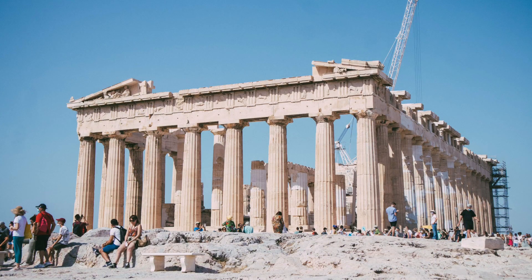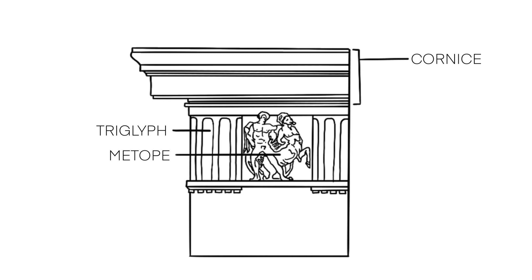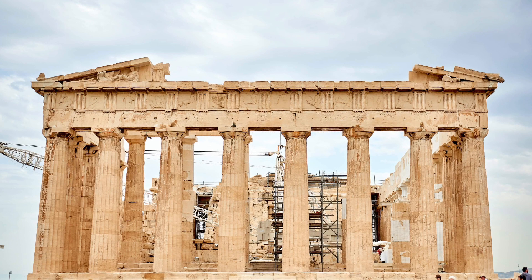Now let's analyze two examples of classical architecture. First, the Parthenon in Athens, Greece. The Parthenon is an iconic temple dedicated to the Greek goddess Athena, located on the Acropolis in Athens. It was constructed in the 5th century BCE and is considered one of the greatest examples of Doric architecture. The temple showcases the principles of classical architecture with its impressive colonnades, triglyphs, and metopes. The Parthenon's proportions are carefully calculated, creating a visually harmonious structure. Despite its age and weathering, the Parthenon continues to captivate visitors with its timeless beauty and architectural significance.